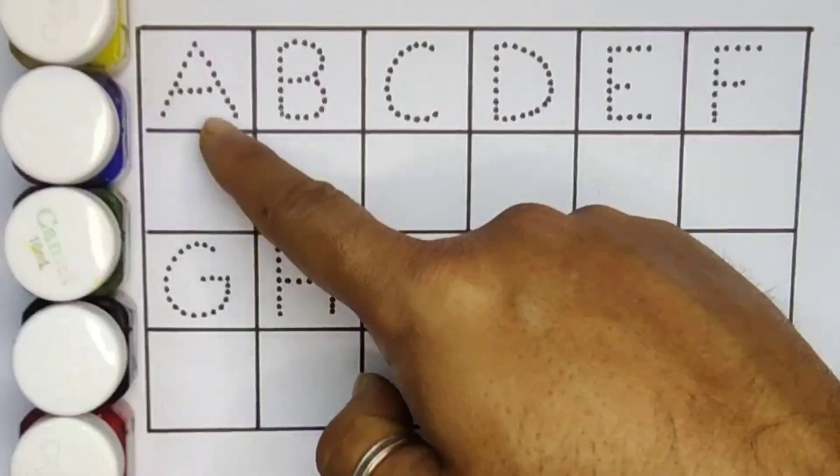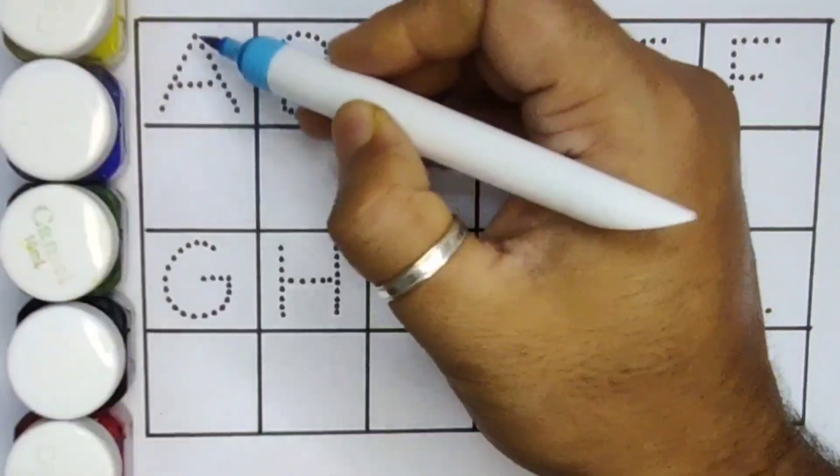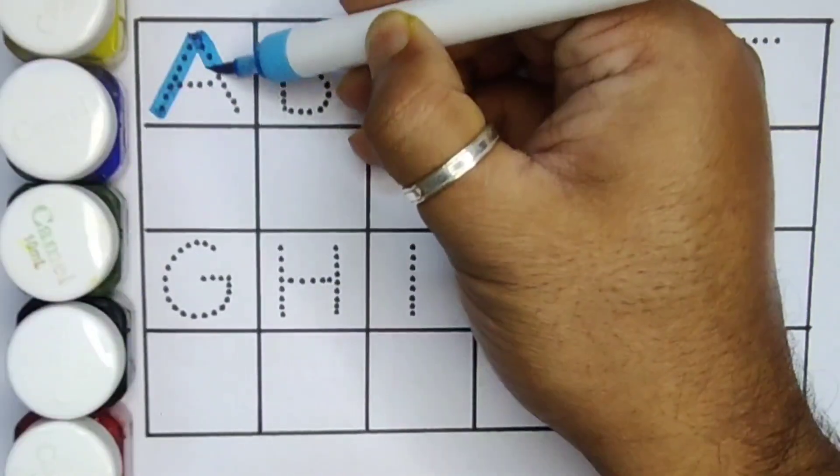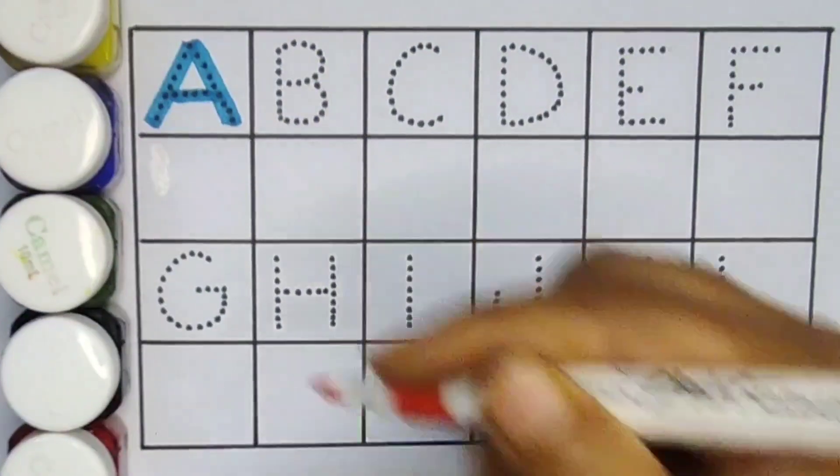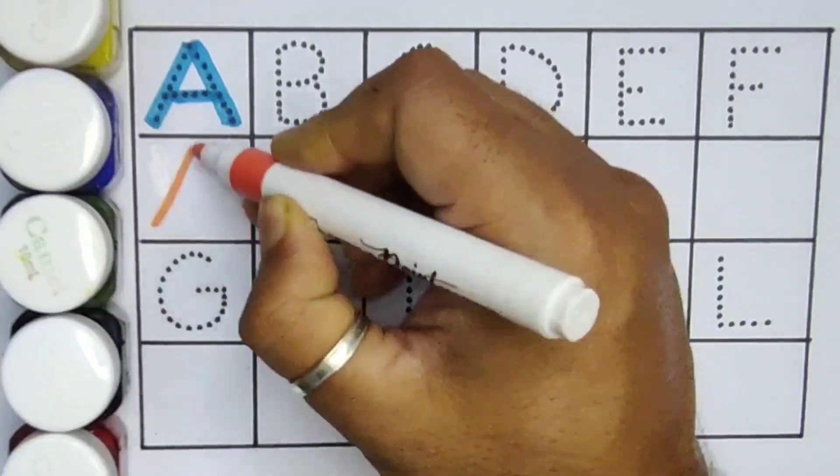Now let's learn the alphabet A, B, C, D. First A, A for aeroplane. Next A, A for ant.